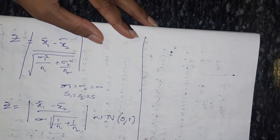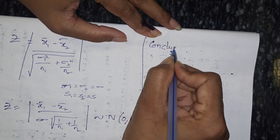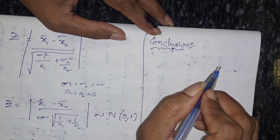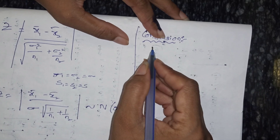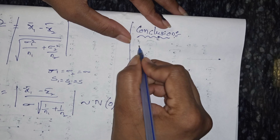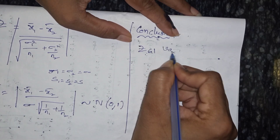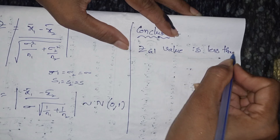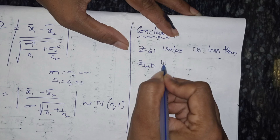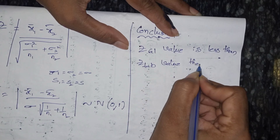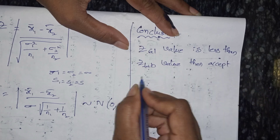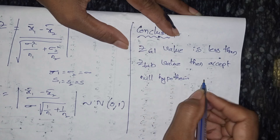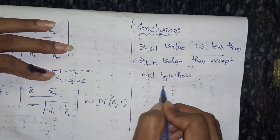The last step is conclusion. We calculate the value and compare to the table value. If Z calculated value is less than Z table value, then accept the null hypothesis. Otherwise, reject the null hypothesis.